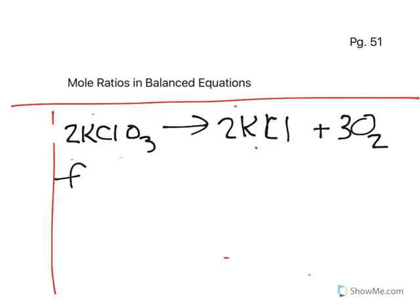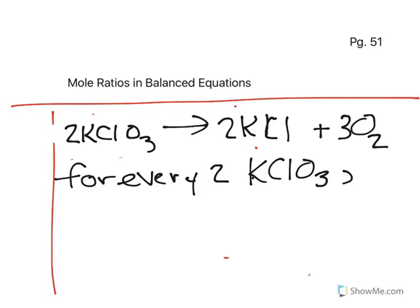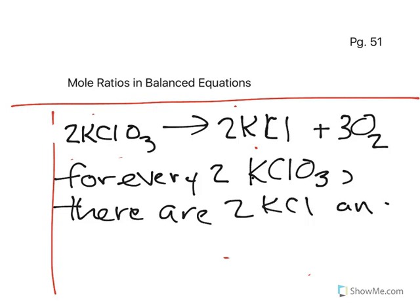What that means, ladies and gentlemen, is that for every 2KClO3, there are 2KCl and 3O2.